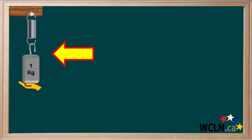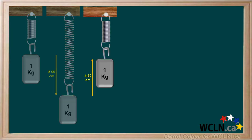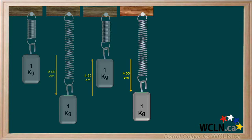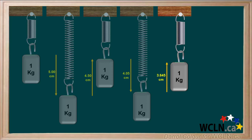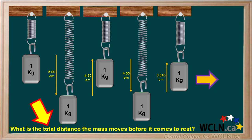Let's do another example. We have a mass hanging on a spring, and we're holding the mass up. When we let it go, the mass falls down 5 cm. Then it bounces up 4.5 cm, and this time it falls down 4.05 cm. Then it bounces up 3.645 cm. The mass will keep on moving down and up, each time by a smaller distance, and eventually it will come to rest. We're asked for the total distance traveled by the mass before it comes to rest.